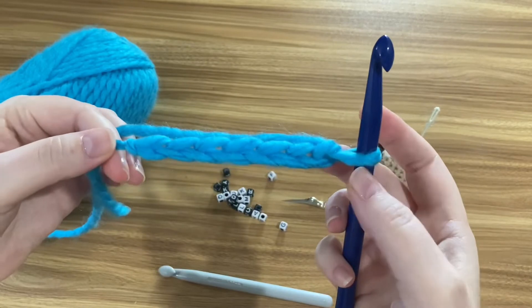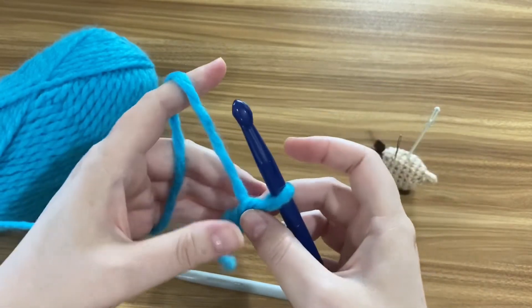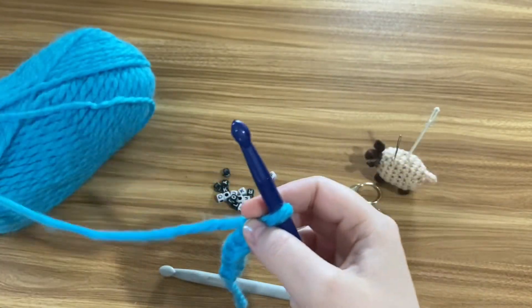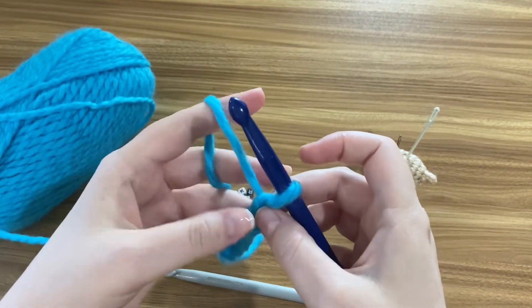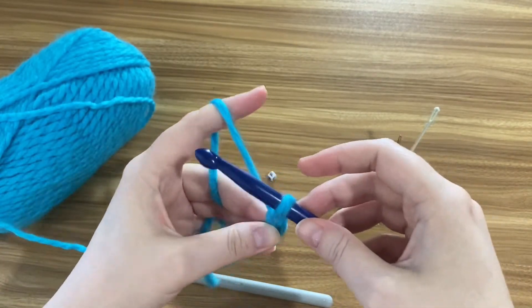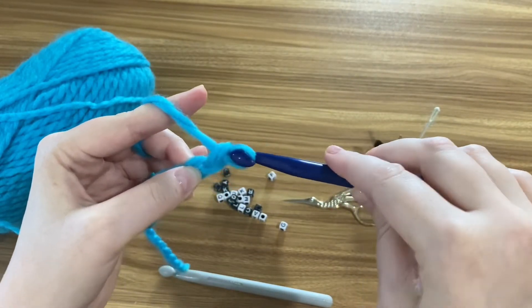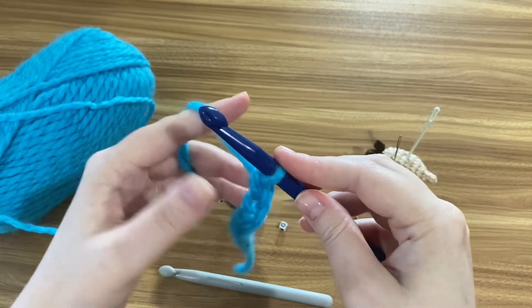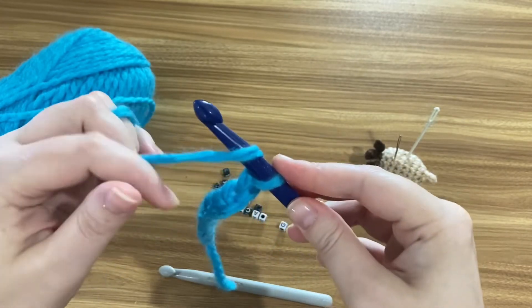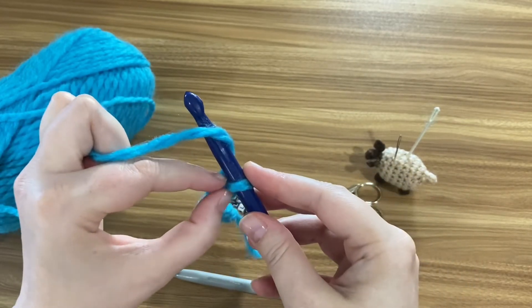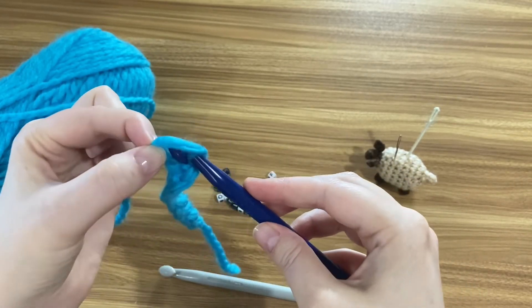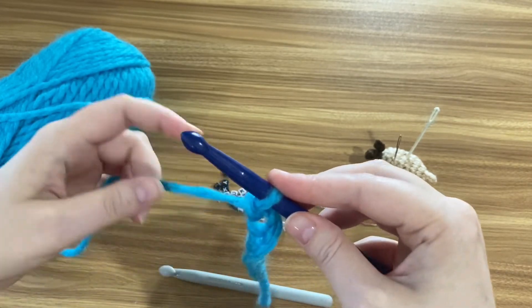This isn't quite long enough yet so I'll do a couple more chains with you. First I'll demonstrate how to chain using the hook. Hold the yarn in your left hand in a way that you feel comfortable with. Yarn over from the back to the front, rotate the hook down and pull the yarn through the loop. Using your fingers, yarn over from the back to the front, pick up the working loop and lift it over the yarn over and over the tip of the hook and then straighten your chain.